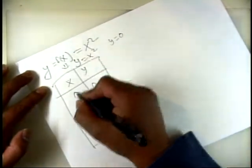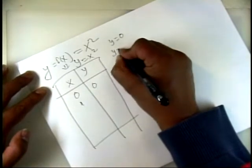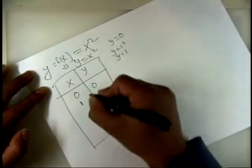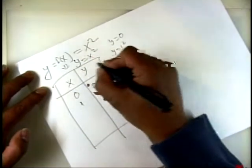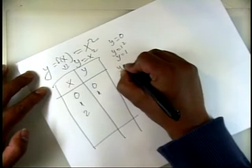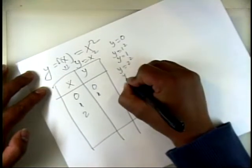When you plug in x equal to 1, y equals 1 squared, which is 1. When x equals 2, y equals 2 squared, which is 4.